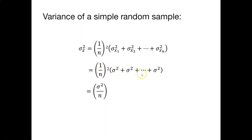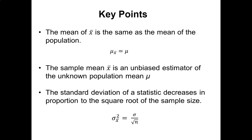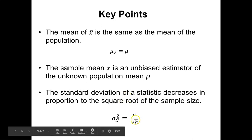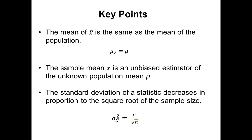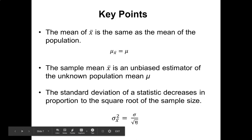We can say that all of the variances are equal, because sigma squared sub x1 is the same as sigma squared sub x2. The variance of a simple random sample is therefore sigma squared divided by n, which is smaller than the variance of the population by a factor of n. Key points: the mean of x-bar equals the population mean mu; x-bar is an unbiased estimator of the unknown population mean mu; and the standard deviation of a statistic decreases in proportion to the square root of the sample size.